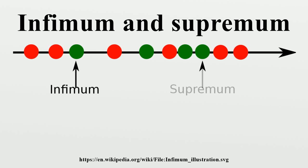If the supremum of a subset S exists, it is unique. If S contains a greatest element, then that element is the supremum. Otherwise, the supremum does not belong to S. Likewise, if the infimum exists, it is unique. If S contains a least element, then that element is the infimum.